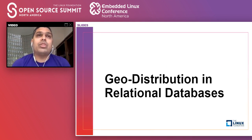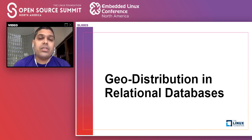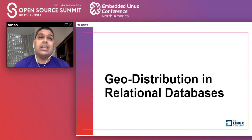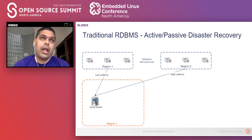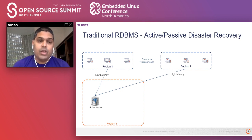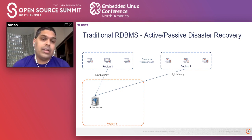Now let's come to the second aspect of the talk, which is about geo-distribution — essentially running a cluster of database nodes across multiple regions or multiple data centers that are geographically far away from each other. In a traditional RDBMS, over the years we have deployed them in essentially two configurations. First is the active-passive configuration, primarily used for disaster recovery.